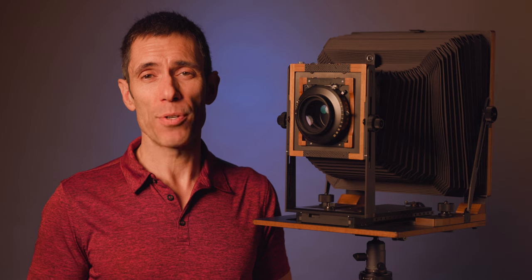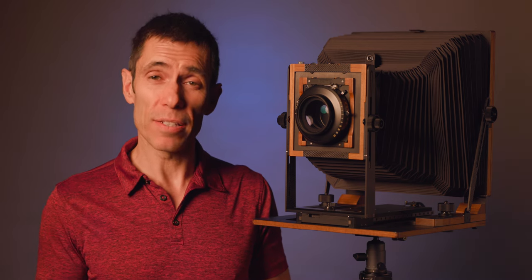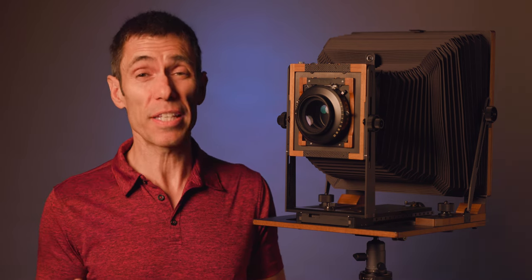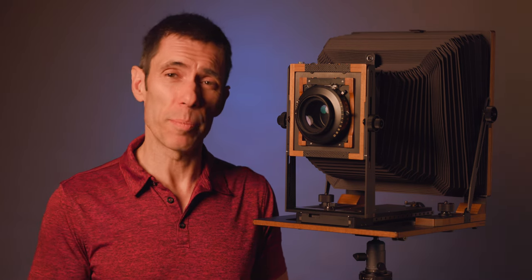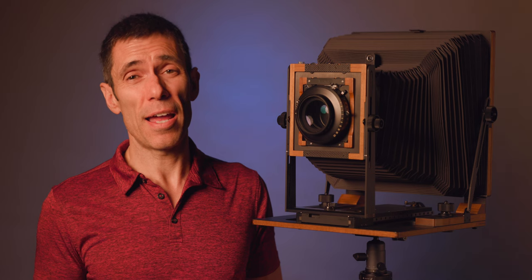Interestingly, long lenses tend to have maximum apertures between f8 to f18, so there isn't any significantly faster alternative lens to the Nikon Nikkor 450 millimeter M lens. At least not that I'm aware of.